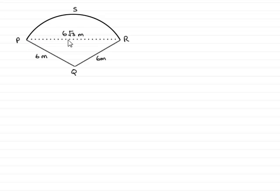We're told that the distance PR is 6√3 meters, and we're asked to find the exact angle PQR in radians.